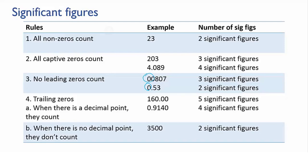Either way, the function of these zeros is only as placeholders. They tell you nothing about the accuracy of the number. So 0.0807 has three significant figures, and 0.53 has two significant figures.